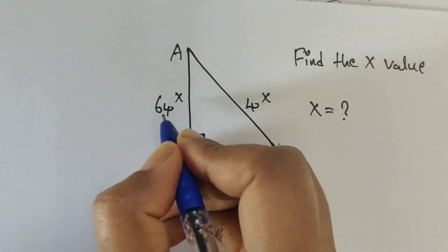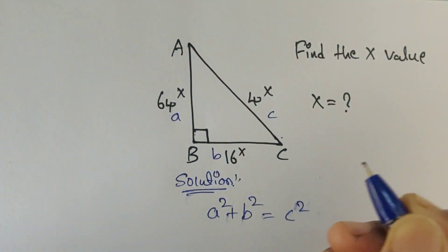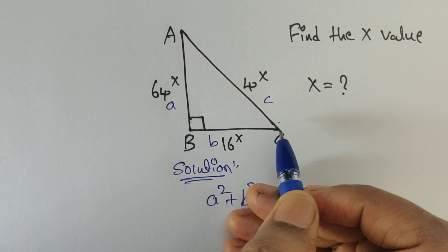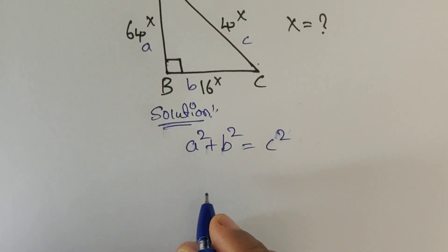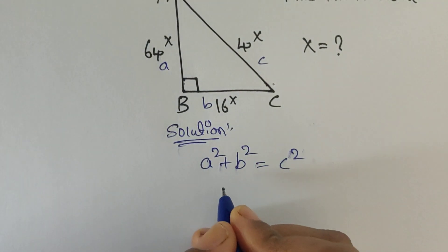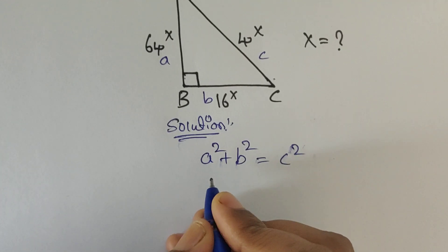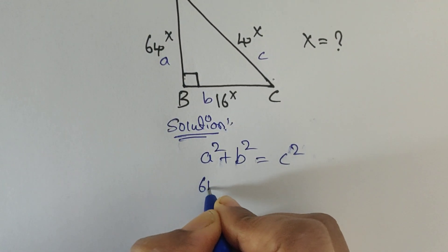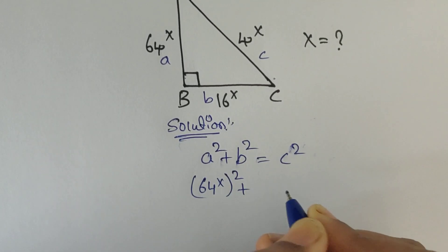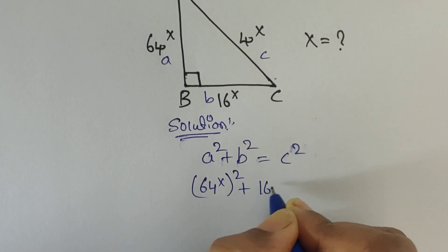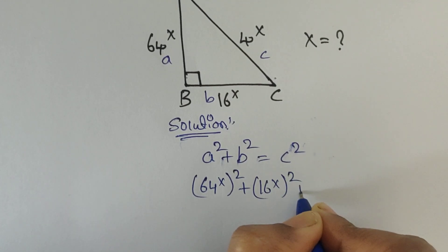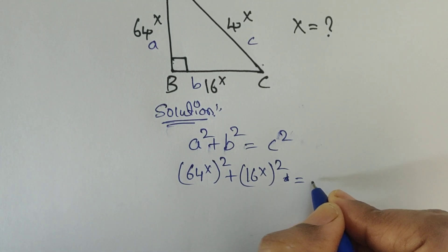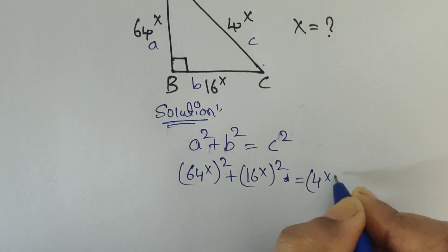So here we identify b, a, and c. These are the a value, b value, and c value. So now just substitute the values of a, b, c in this formula. The value of a is 64 to the power of x, whole to the power of 2. Plus the value of b, 16 to the power of x, whole to the power of 2, is equal to c squared — that is, 4 to the power of x, whole to the power of 2.